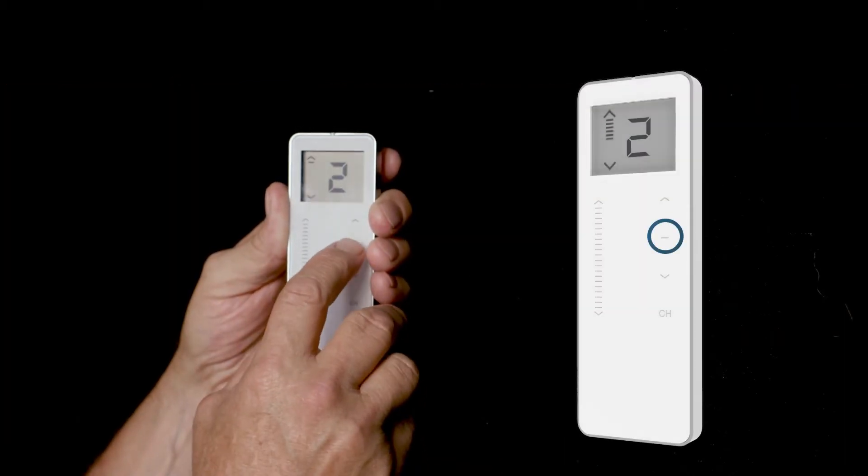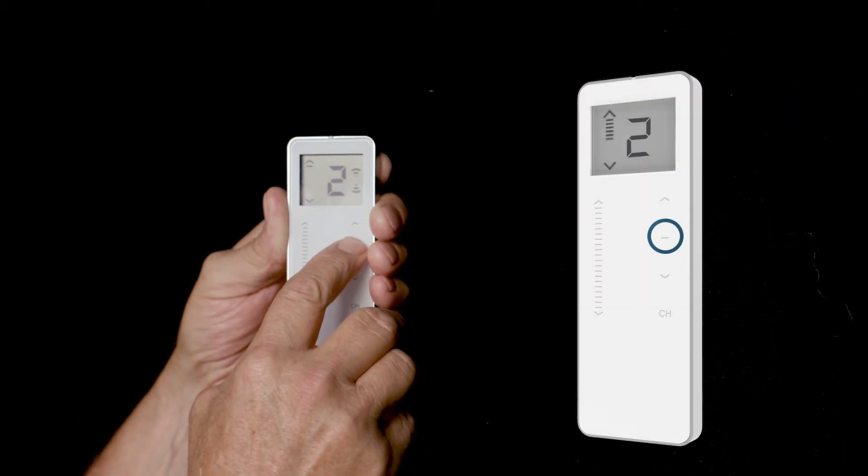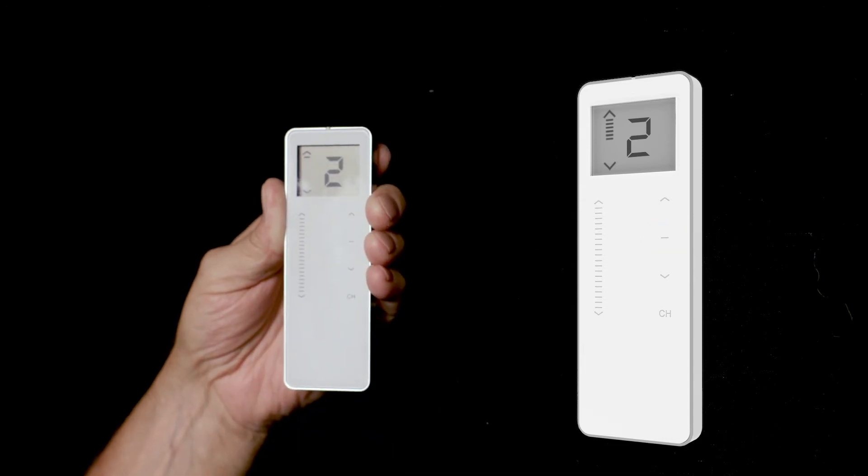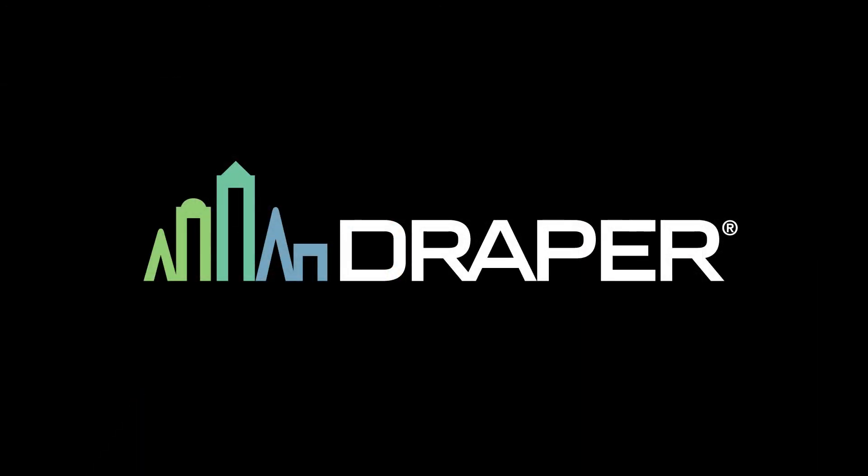To return the shade to the favorite position, press and hold the stop button until the shade starts moving. The shade will automatically stop at the favorite position.